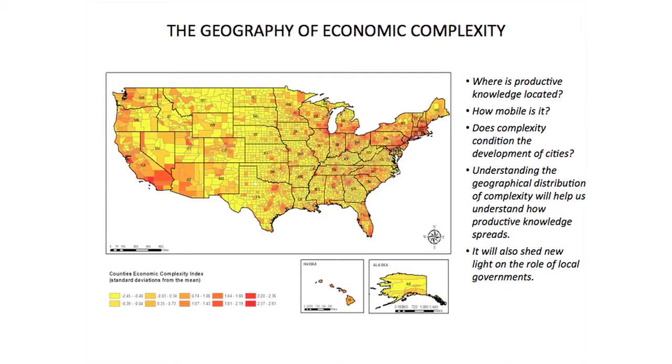We're also excited about moving to sub-national levels. Juan Pablo Chauvin, one of our fellows, is working with U.S. data where he's already mapped the complexity of each county in the U.S. We're working with people in this room to do sub-national maps of countries like Colombia, Mexico, Peru, and Ecuador, so that decisions can be made at the local level where they usually happen.